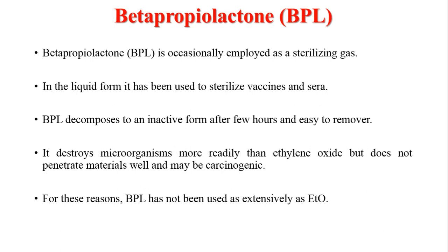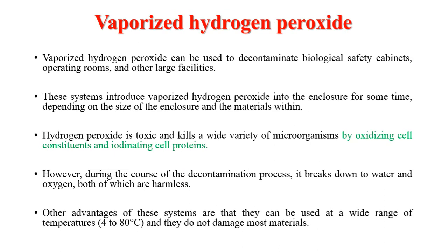Ethylene oxide, by contrast, is very difficult to remove. BPL destroys microorganisms more readily than ethylene oxide, but it does not penetrate materials as well as ethylene oxide can, and it also has some carcinogenic properties. Because of these reasons, BPL is not widely used. Vaporized hydrogen peroxide can also be used for killing microorganisms, as it oxidizes cell constituents and damages them.